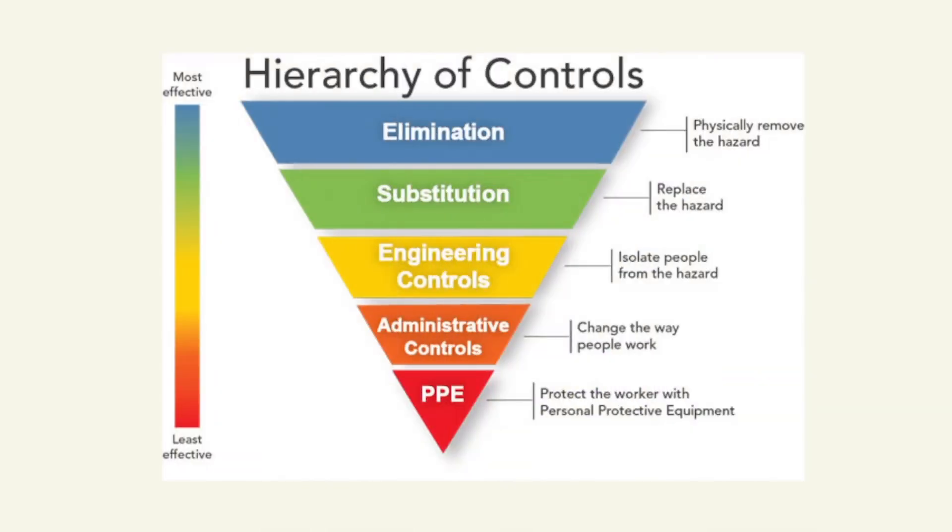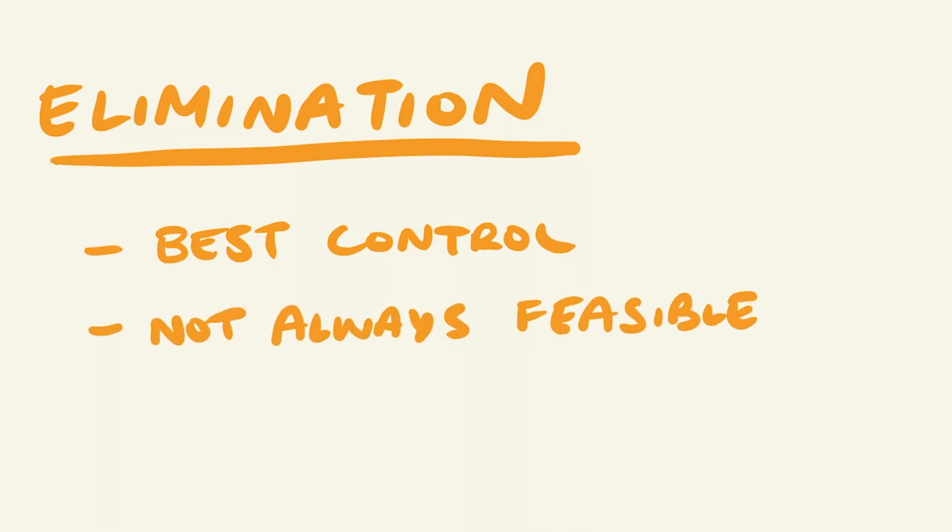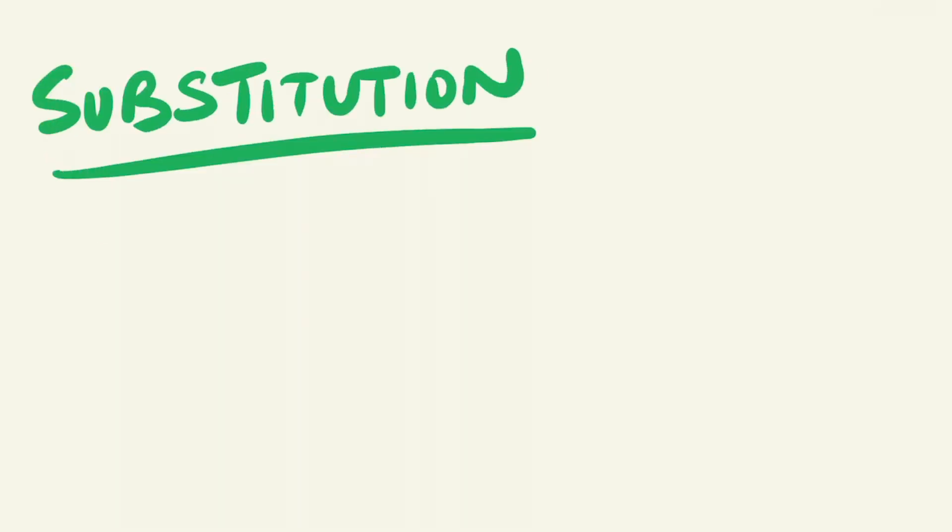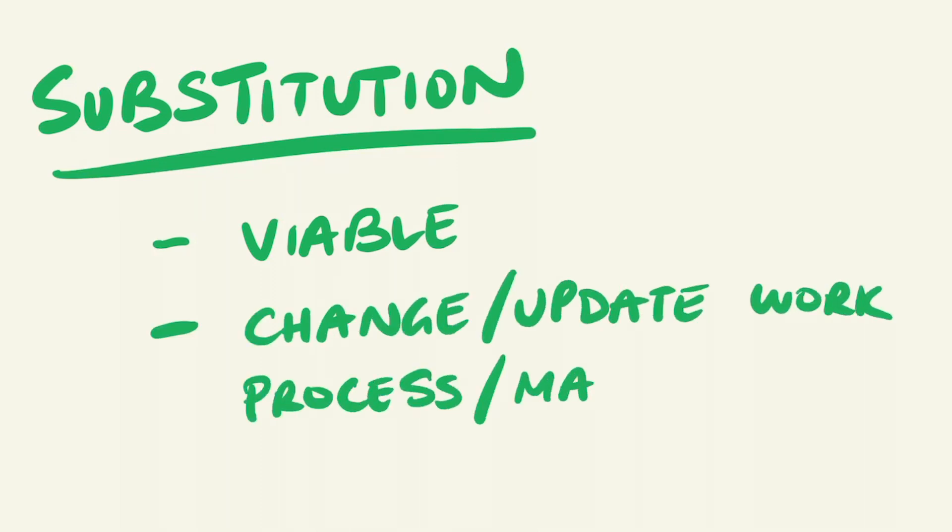In terms of managing risk through the implementing of controls in the workplace, we follow the hierarchy of controls. Elimination would be the best type of control, but may not always be feasible, as it would mean the removing of work or machinery which produces excessive noise. Substitution may also be a viable solution, by changing or updating work processes or equipment to ones which produce less noise.